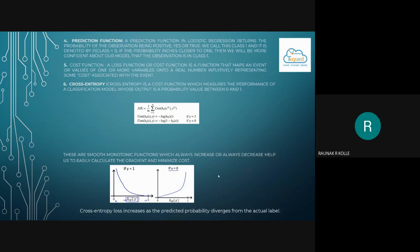We then have the prediction function. A prediction function in logistic regression returns the probability of the observation being positive, yes or true. We call this class 1 and it is denoted by p where class equal to 1. If the probability inches closer to 1, then we will be more confident about our model that the observation is in class 1. And similarly, if the prediction is closer to minus 1, we can determine that it belongs to the negative review set.